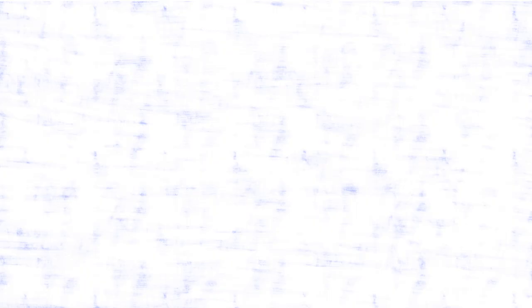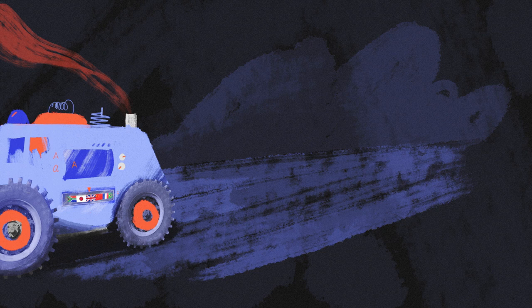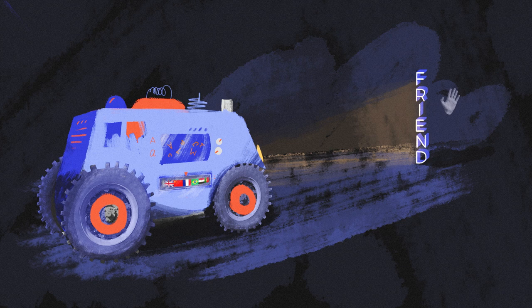If you train a language model on a sufficient number and variety of examples, the final product will be a system that can predict the neighboring terms for any given word. That way, when a well-trained machine translation engine runs into the word 'friend,' it'll know not to translate the verb 'run into' so literally.